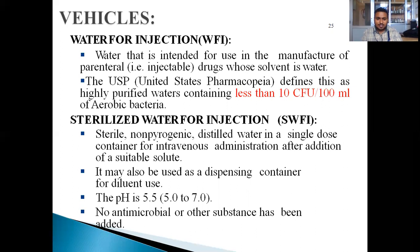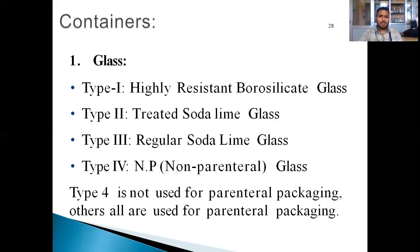Next is sterile water for injection. It is sterile, non-pyrogenic, non-pyogenic distilled water in a single-dose container for intravenous administration after addition of a suitable solute. It may also be used as a dispensing vehicle for dilute use. The pH is 5.5, meaning between 5 to 7. No antimicrobial or other substances have been added.